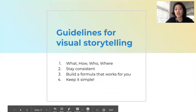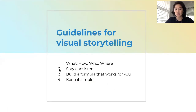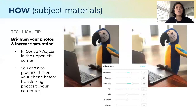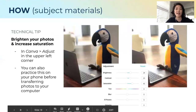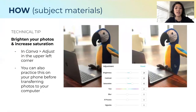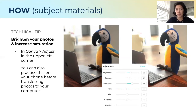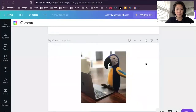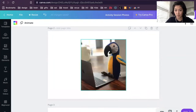Going back to refresh our guidelines: we want to create the what, how, who, and where; stay consistent; build a formula for this specific activity; and of course keep it simple. We discovered Paulina the parrot as something unique to this class. She answers the question of how, since she helps deliver the subject materials. My technical tip in Canva was to take the original photo and adjust it to be a little brighter, because most people are looking at these photos on mobile.